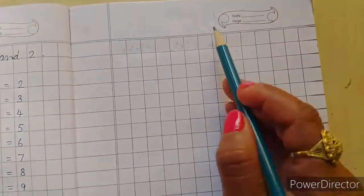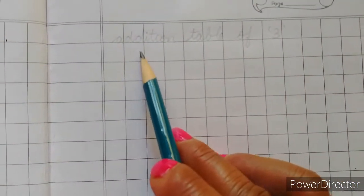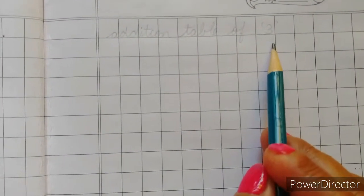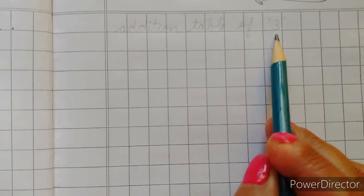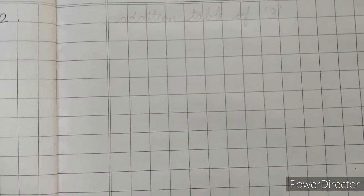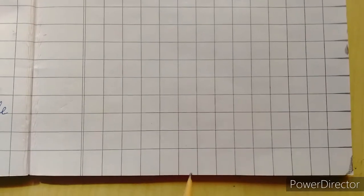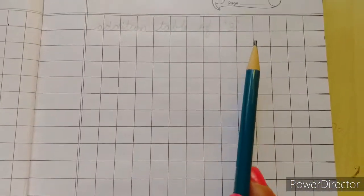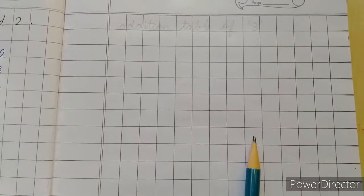On the next page here you will write H-W and write this matter. Addition table of 3. You will write the addition table of 3. And on the downside, you will write the same - the spelling of circle, triangle and cone as it is. Only the addition table, instead of one and two, you will write three.